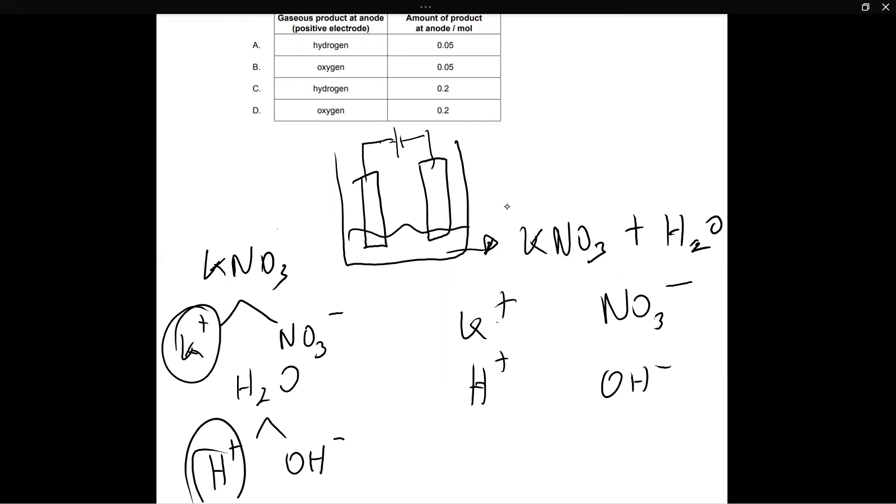But now the real trick, the tricky part of this is to determine out of H plus and K plus, which is going to get reduced and out of OH minus and NO3 minus, which is going to get oxidized. Now from the oxidation of these, remember oxidation is a loss of electrons. From the oxidation of one of these substances will the reduction of one of these substances happen, because whichever electrons these guys give away, those electrons are going to be consumed by one of these guys. So we have to first decide out of these two, NO3 minus and OH minus, who is going to undergo oxidation. And remember, oxidation happens at the anode.